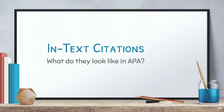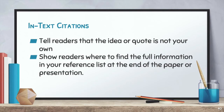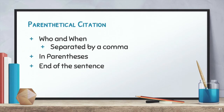Now we'll talk a little bit more about the finer details of in-text citations and what they look like in APA. In-text citations tell readers that the idea or quote is not your own, and they show readers where to find the full information in your reference list at the end of the paper or presentation. When you quote or paraphrase someone, you should include a credit in the paragraph to show readers where to find the full citation in your reference list. You can do this through either a parenthetical citation or a narrative citation. A parenthetical citation means the important information will appear in a set of parentheses at the end of the last sentence in which you quote or paraphrase the original source. The information is usually the first author's last name and the year of publication.